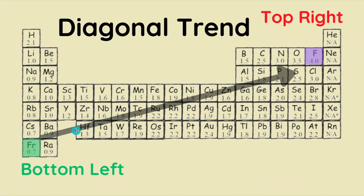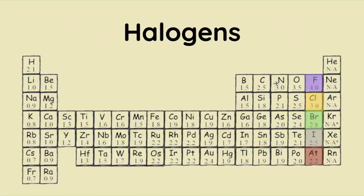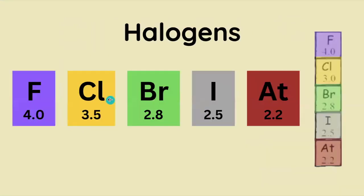Next up we're going to look at the halogens. Fluorine is 4.0, chlorine is 3.5, bromine is 2.8, iodine is 2.5, and astatine is 2.2.